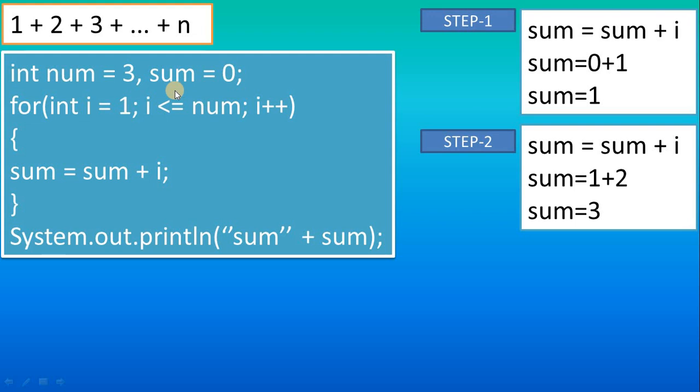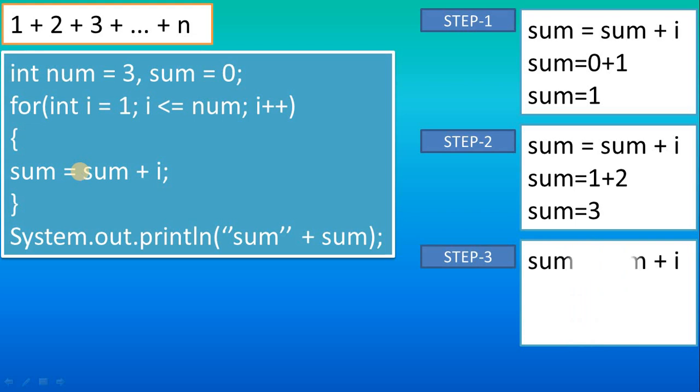1 + 2, so it will now be 3. Then the value of i is incremented by 1, so the next value will be 3. 3 less than or equal to 3, condition is true. What about step 3, the third iteration? Again we have the same logic: sum = sum + i.